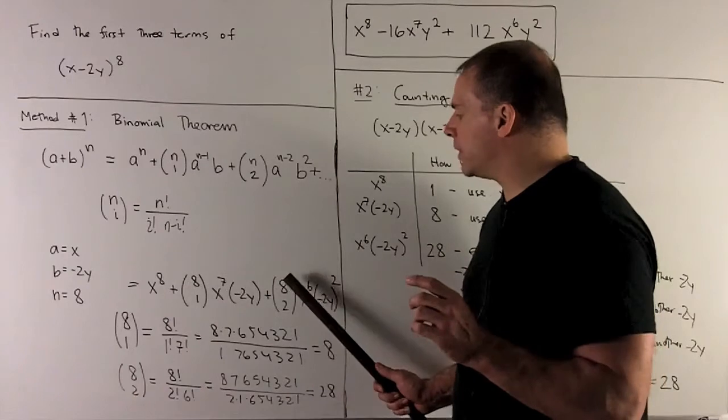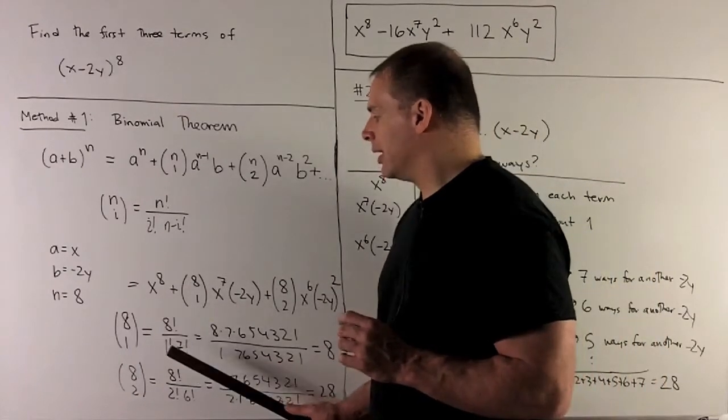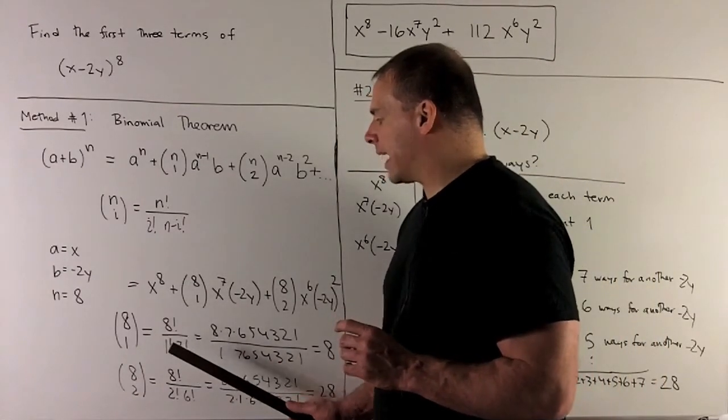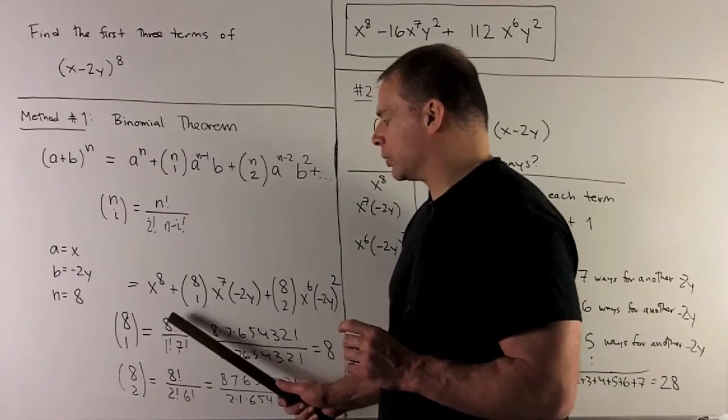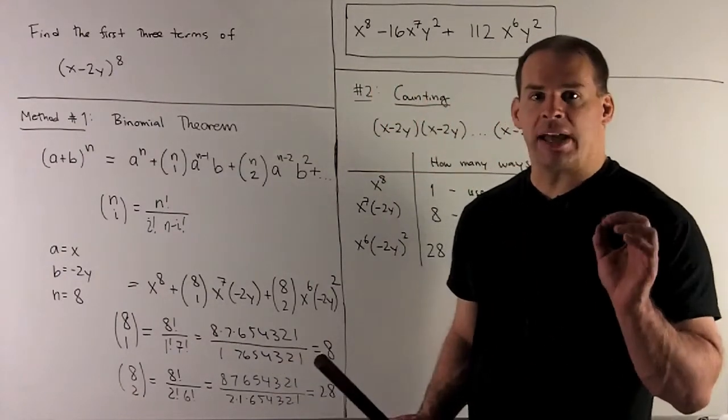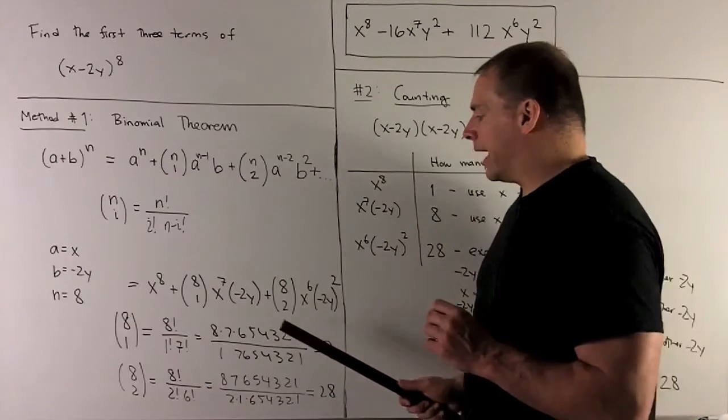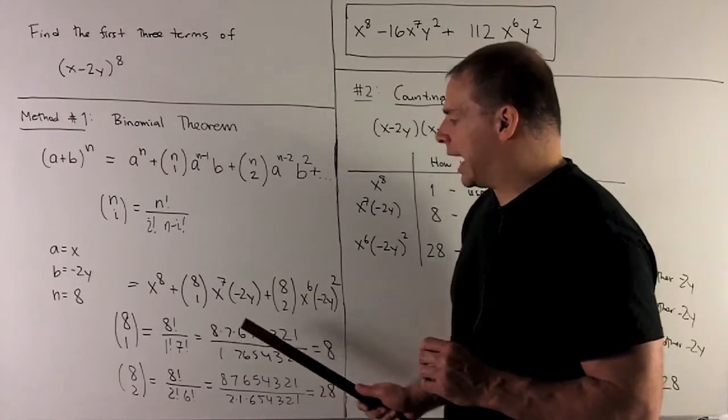If I go for the binomial coefficients, we have 8 choose 1, it's going to be 8 factorial over 1 factorial times 7 factorial, 1 + 7 equals 8. Then we just write out the factorials. So, 8 factorial is going to be 1, 2, 3, 4, all the way up to 8.